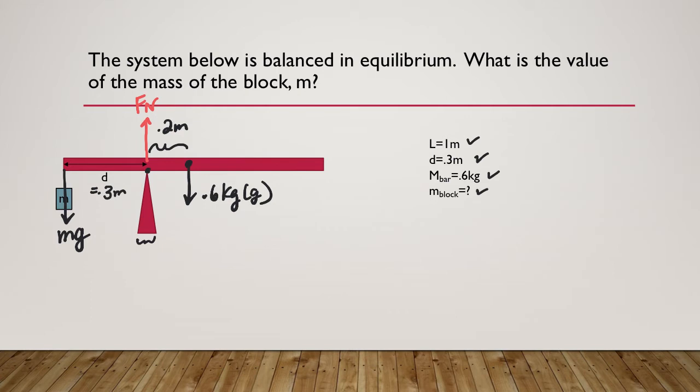So the first thing we might want to do is, if we want to figure out what that force is and what the mass is, let's do sigma f y equals 0. Let's apply Newton's third law. It's in equilibrium, so the up forces must equal the down forces. That normal force from the support should equal mg plus 0.6 kilograms times g. You see very quickly we can't solve that because we don't know the mass of the hanging mass and we don't know the normal force. So we're stuck.